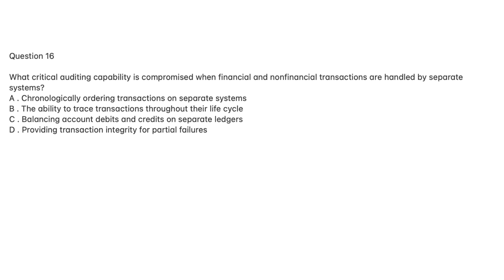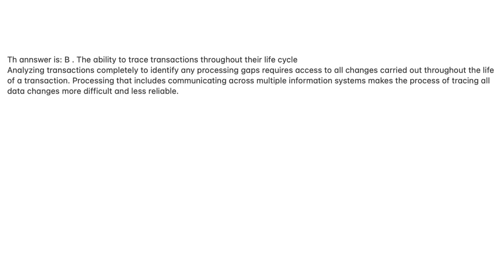Question 16. What critical auditing capability is compromised when financial and non-financial transactions are handled by separate systems? A. Chronologically ordering transactions on separate systems. B. The ability to trace transactions throughout their life cycle. C. Balancing account debits and credits on separate ledgers. D. Providing transaction integrity for partial failures. The answer is B. Analyzing transactions completely to identify any processing gaps requires access to all changes carried out throughout the life of a transaction. Processing across multiple information systems makes tracing all data changes more difficult and less reliable.